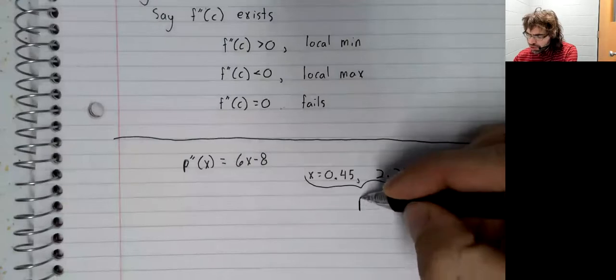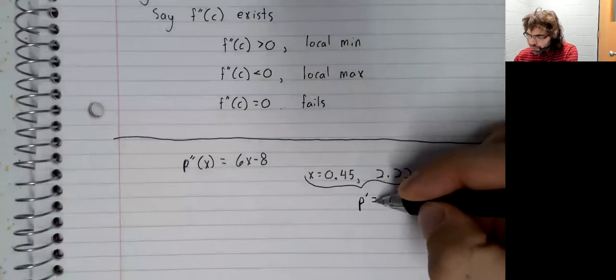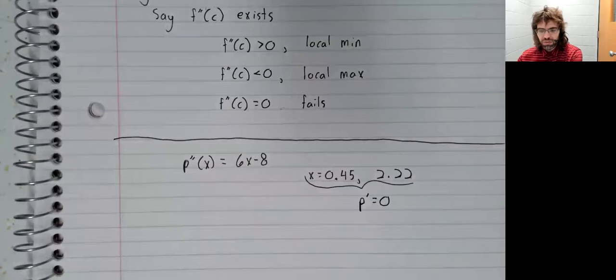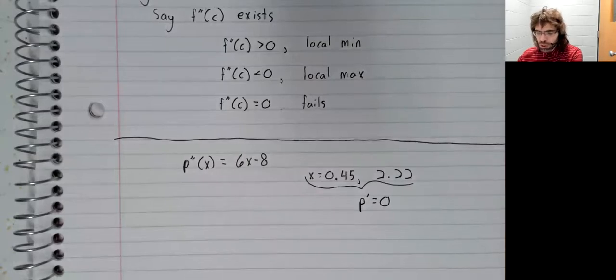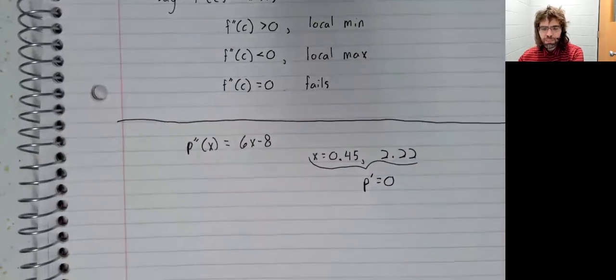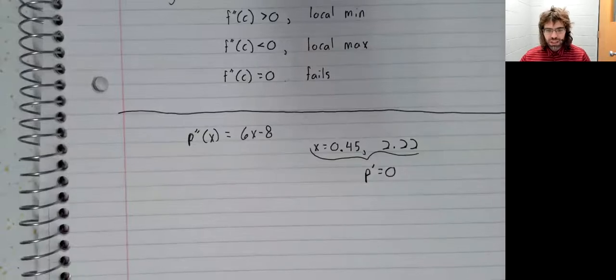Both of these critical values were a result of the derivative being zero, so we can attempt the second derivative test.